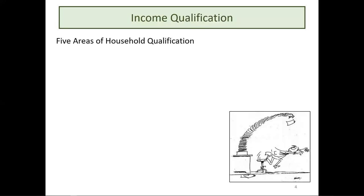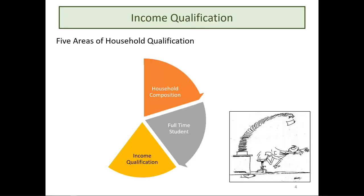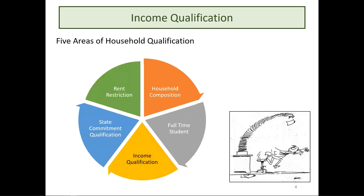In qualifying a household to move into the property, there are five areas of household qualification. First, you need to determine the household composition. You need to determine whether the household meets the full-time student rule. You need to do an income calculation and make sure the household is at or below the income limit, whether the household meets a state commitment qualification if necessary, and then the rent must stay restricted for that household. We're going to discuss the full-time student issue, the income qualification, and how to calculate the income for the household.